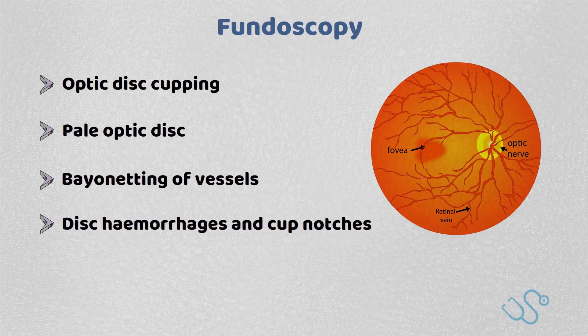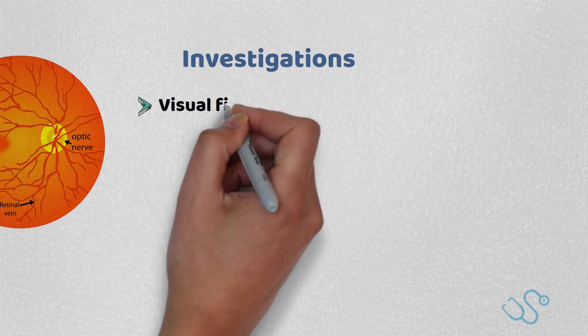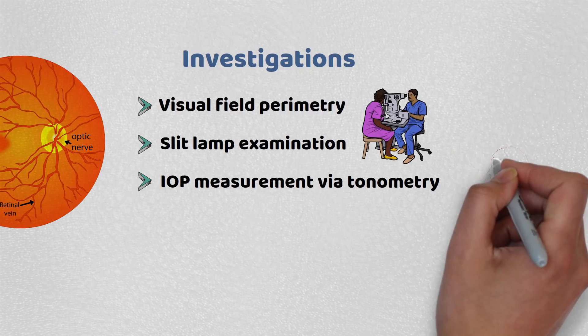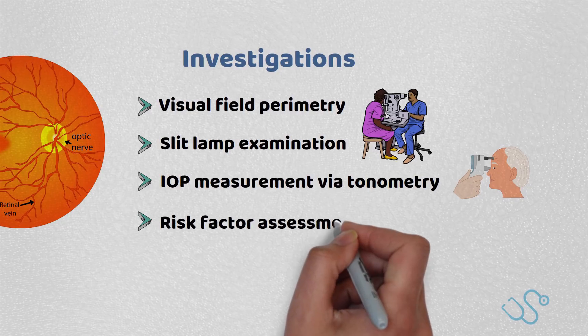These patients often need specialist ophthalmological care where they'll undergo certain investigations including visual field perimetry which shows defects, slit lamp examinations showing optic nerve damage, intraocular pressure measurement via tonometry, usually about 24 millimeters of mercury, and risk factor assessments.